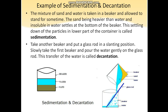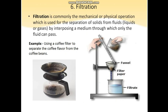Now take another beaker and place a glass rod in a slanting position. Slowly take the first beaker and pour the water gently onto the glass rod. This transfer of water is called decantation. Through this process, we get sand and water separated.